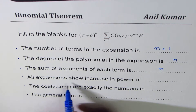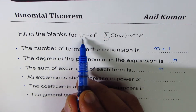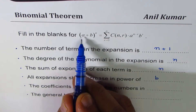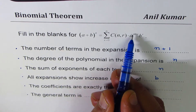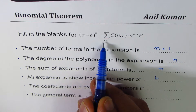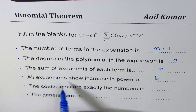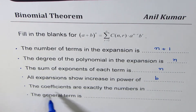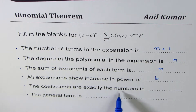All expansions show an increase in power of b and a decrease in power of a as you expand. Do you see that a is n minus r, b is r, and r increases from 0 to n? So all expansions show an increase in the power of b. The coefficients are exactly the numbers found in Pascal's triangle.